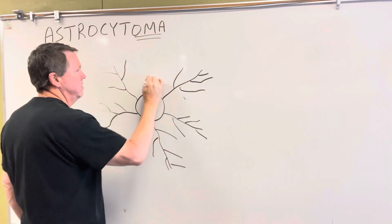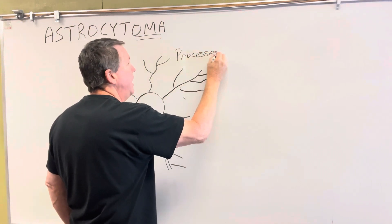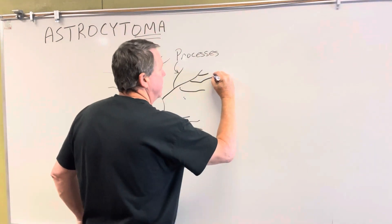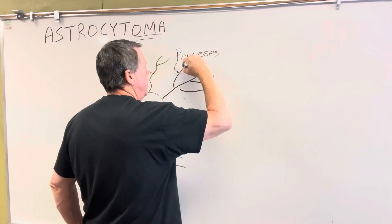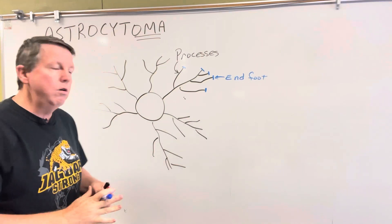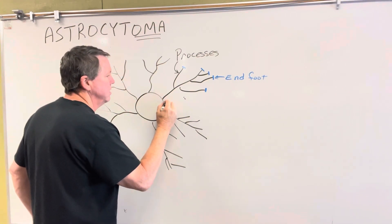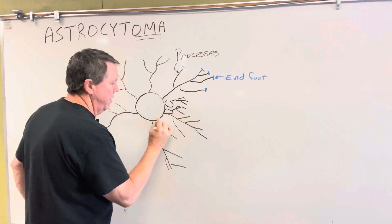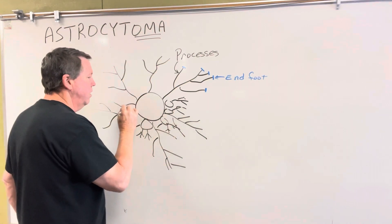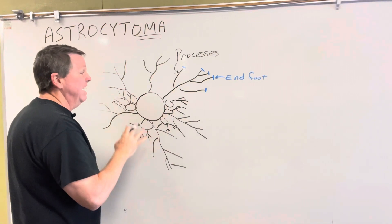This is why they call them astrocytes — because they look kind of star-shaped, and these extensions are called processes. At the end of these processes, we have something called an end foot. In a tumor, cells start to grow uncontrollably — the astrocytes start to divide and multiply. In tumors, these tumor cells are usually not going to be as well-functioning as the original cell type.